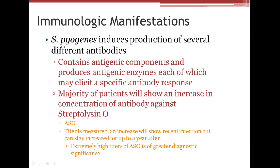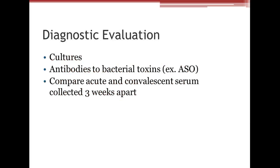Immunologic manifestations: strep pyogenes induces the production of several antibodies — it contains antigenic components and produces antigenic enzymes that elicit specific antibody responses. The majority of patients will show an increase in the concentration of antibody against streptolysin O, called ASO (anti-streptolysin O). The ASO titer is measured, and an increase indicates recent infection, but it can stay elevated for up to a year. Extremely high ASO titers are of great diagnostic significance. Diagnostic evaluation includes cultures, looking for ASO antibodies, and comparing acute and convalescent serum collected three weeks apart.